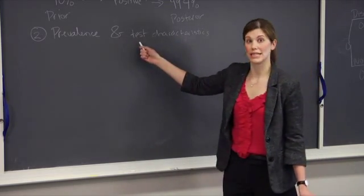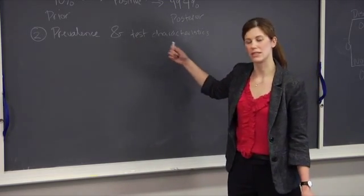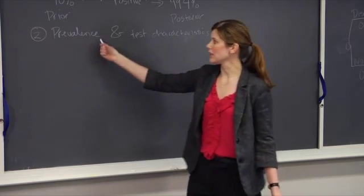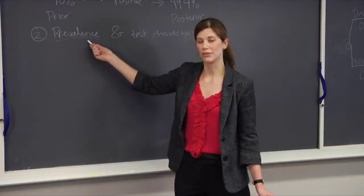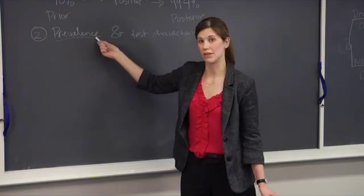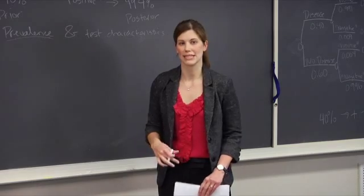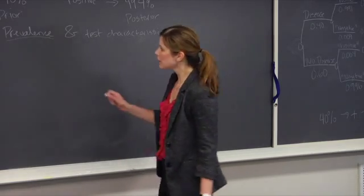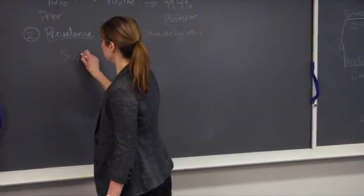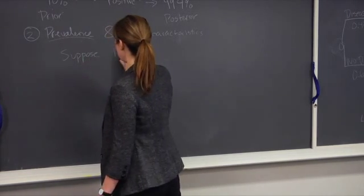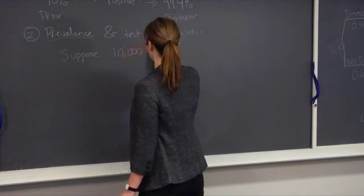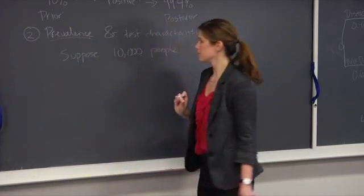So sensitivity and specificity was exactly the same. The only thing that differed was background prevalence was 40% instead of 1%. Let's return to the United States where average HIV prevalence in the U.S. is less than 1%. Let's suppose that we test 10,000 people in the population for HIV.